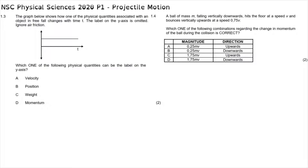The projectile motion section of the 2020 physics paper starts with question 1.3 of multiple choice, which reads: the graph below shows how one of the physical quantities associated with an object in freefall changes with time t. The label on the y-axis is omitted. Which one of the following physical quantities can be the label on the y-axis?